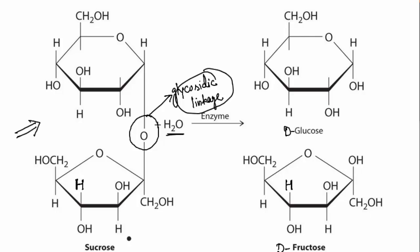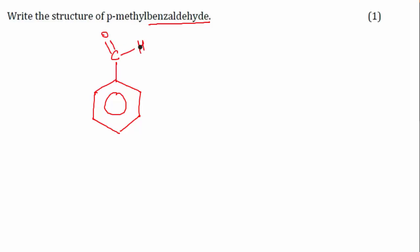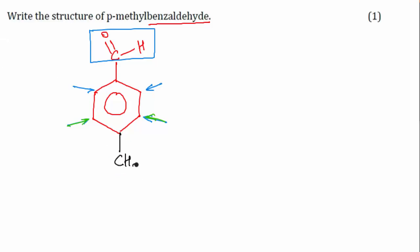Next question: what is the structure of p-methylbenzaldehyde? Benzaldehyde is benzene with an aldehyde group. The positions on the ring relative to the aldehyde functional group are: ortho (adjacent), meta (next), and para (opposite). For p-methylbenzaldehyde, add a CH3 group at the para position.